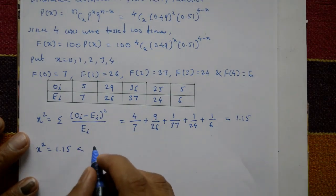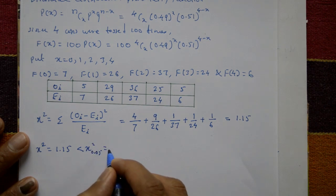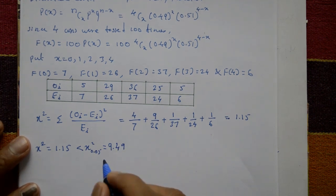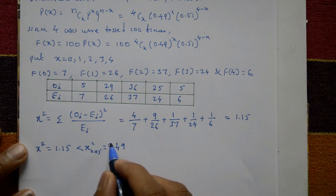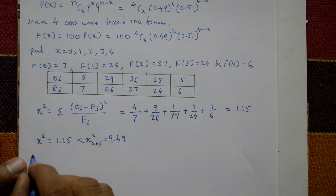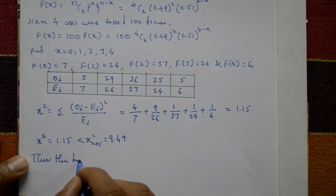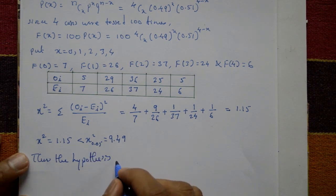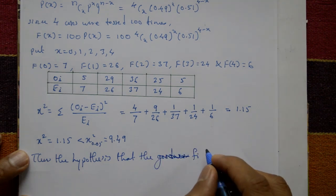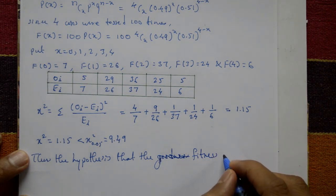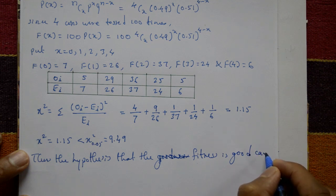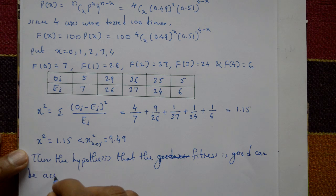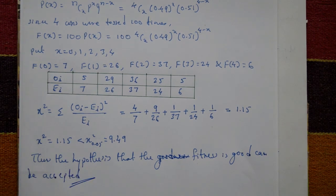The calculated chi-square value of 1.15 is less than the table value of chi-square at 0.05, which equals 9.49. Since 1.15 is less than 9.49, we conclude that the hypothesis that the fitness is good is accepted — the binomial distribution is a good fit for this data.